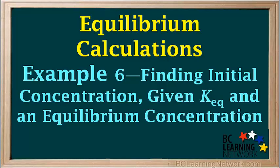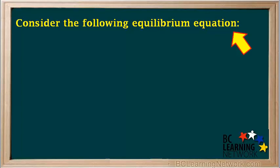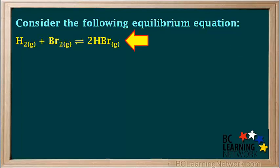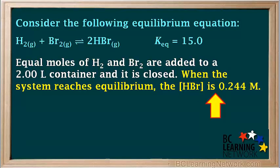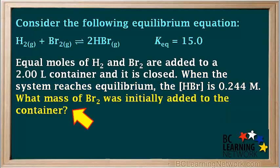In this example, we're given an equilibrium equation, the value of Keq, and one equilibrium concentration, and we're asked to find an initial concentration. Consider the following equilibrium equation: H2 gas plus Br2 gas gives 2 HBr gas, which has an equilibrium constant Keq equal to 15.0. Equal moles of H2 and Br2 are added to a 2-liter container and it is closed. When the system reaches equilibrium, the concentration of HBr is found to be 0.244 molar. The question asks: what mass of Br2 was initially added to the container?